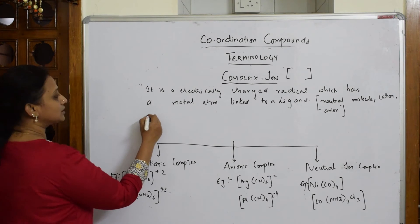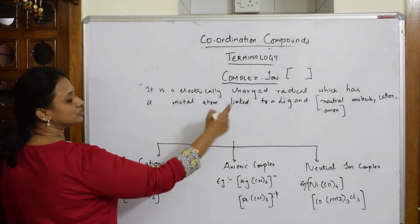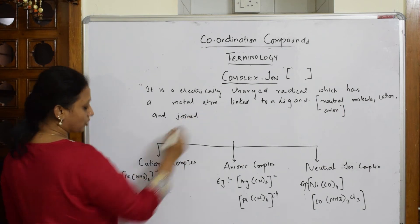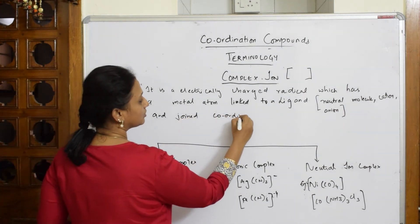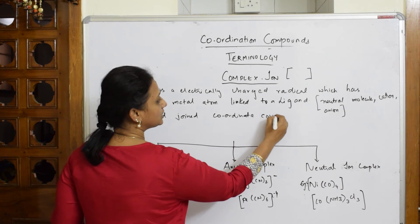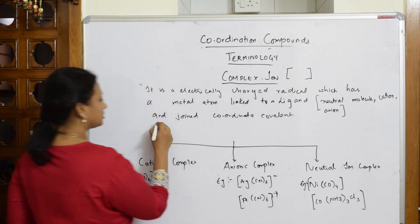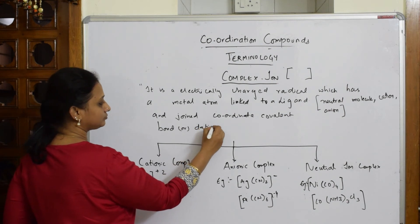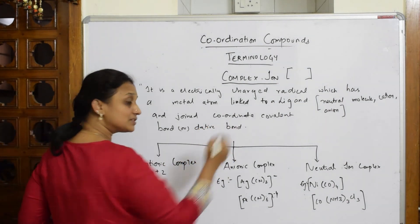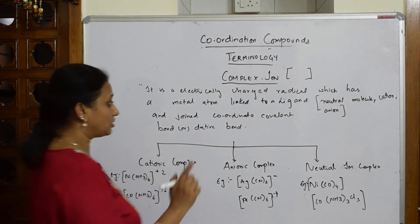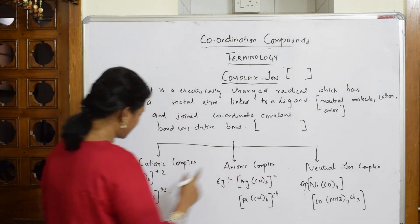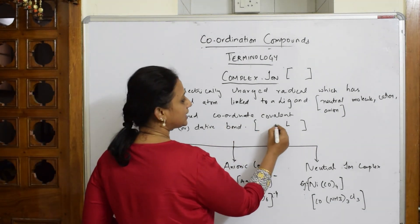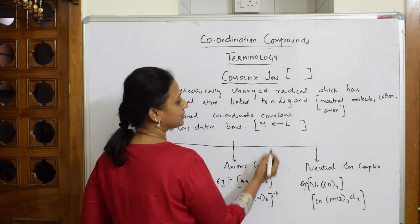The metal is linked to ligand and joined by a coordinate covalent bond or dative bond. How is electron transfer happening? Always remember: electrons get transferred from ligand to the metal. The ligand donates electrons to the metal.